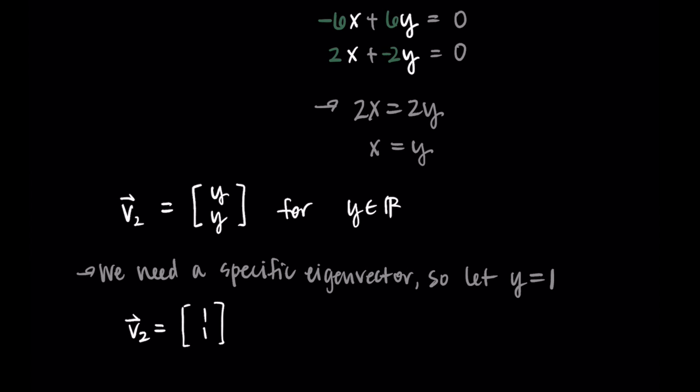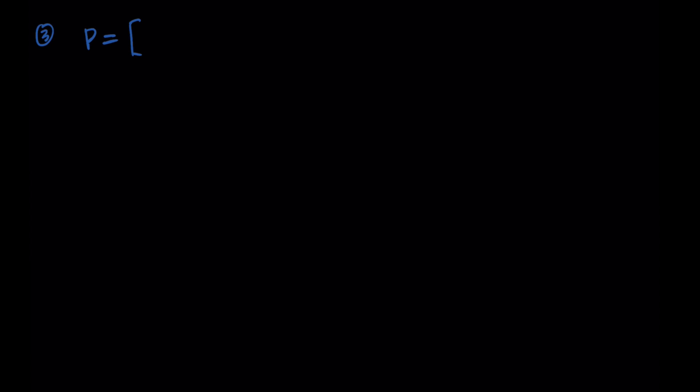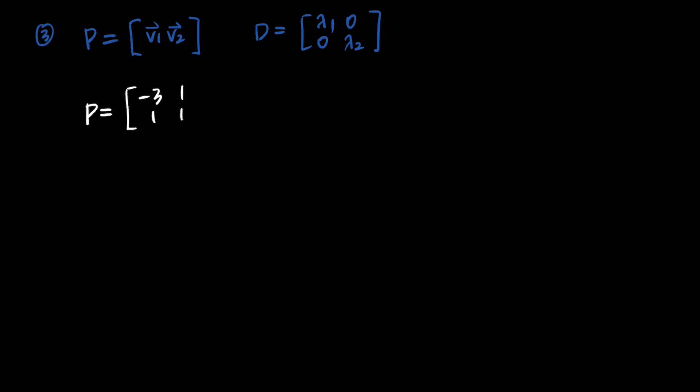We've found our eigenvalues and eigenvectors, so now we need to put everything together. Matrix P comes from the eigenvectors as the columns, and D has the eigenvalues on the diagonal. So P has negative 3, 1 in the first column for the first eigenvector, and 1, 1 in the second column. Then D has negative 1 and 7 on the diagonal with zeros in the other positions.